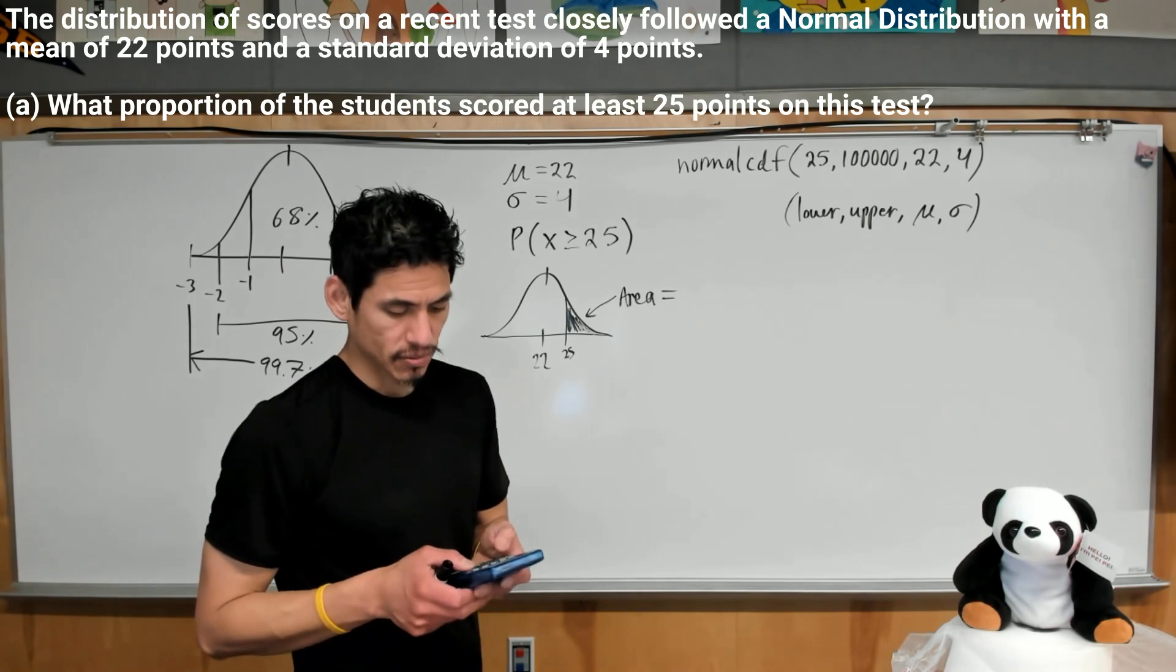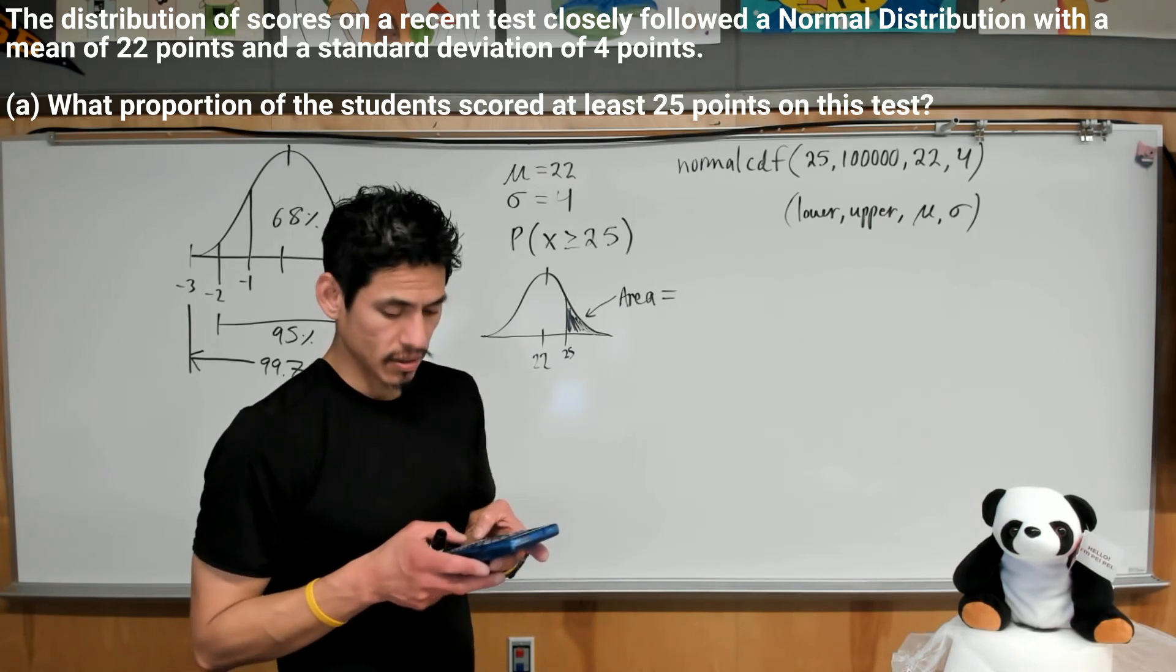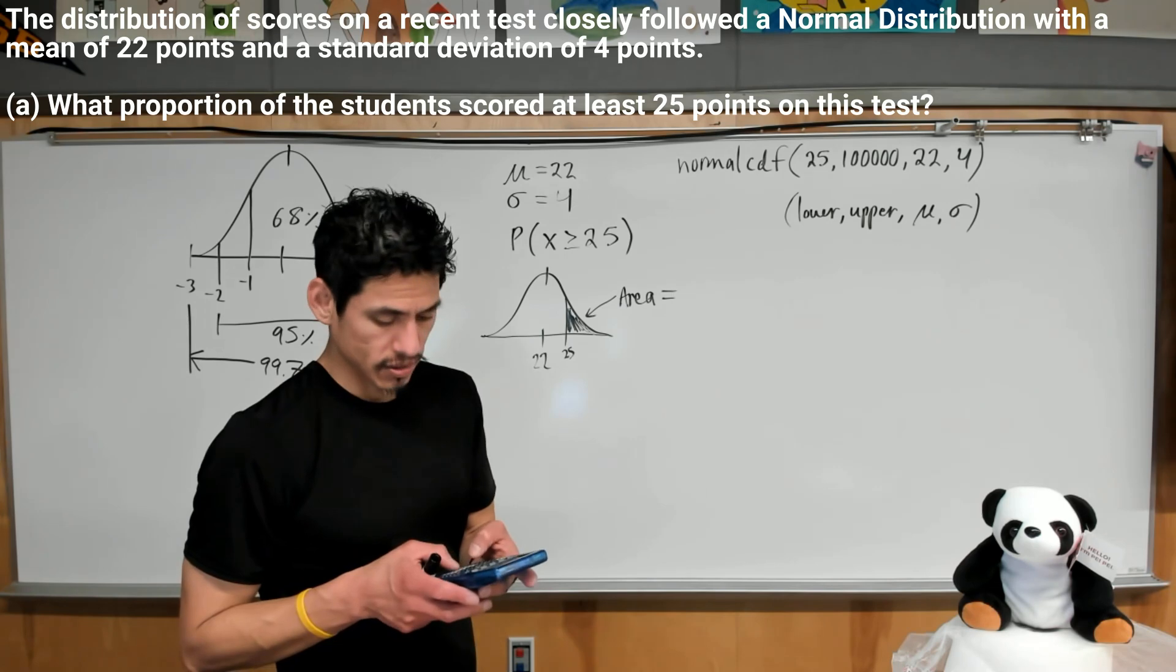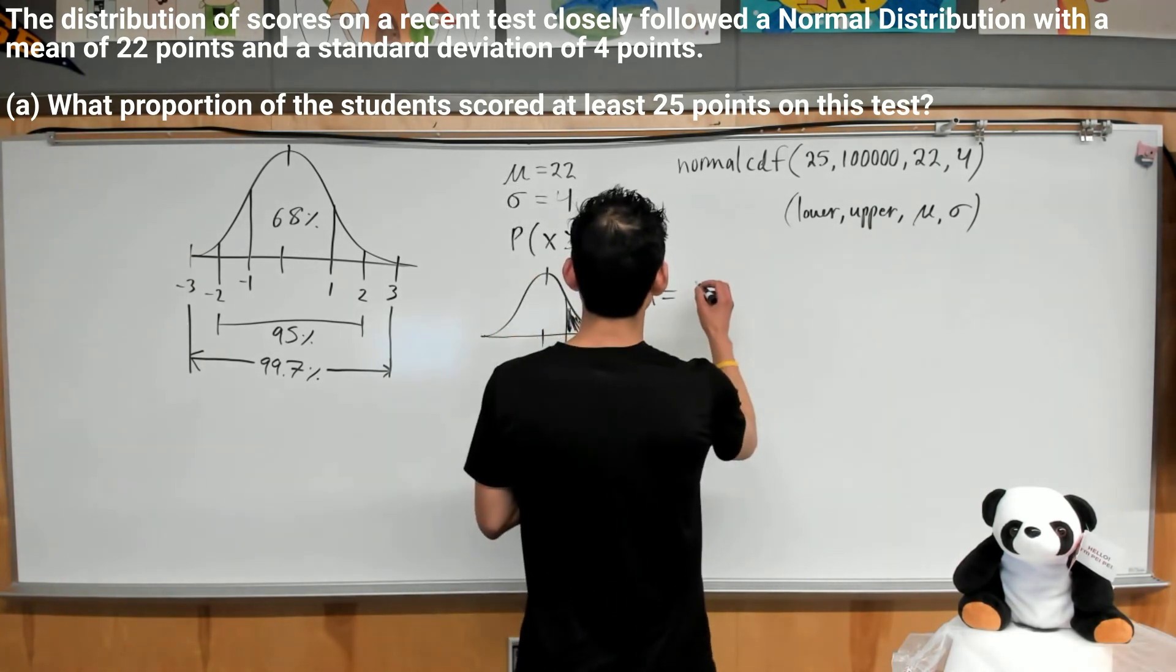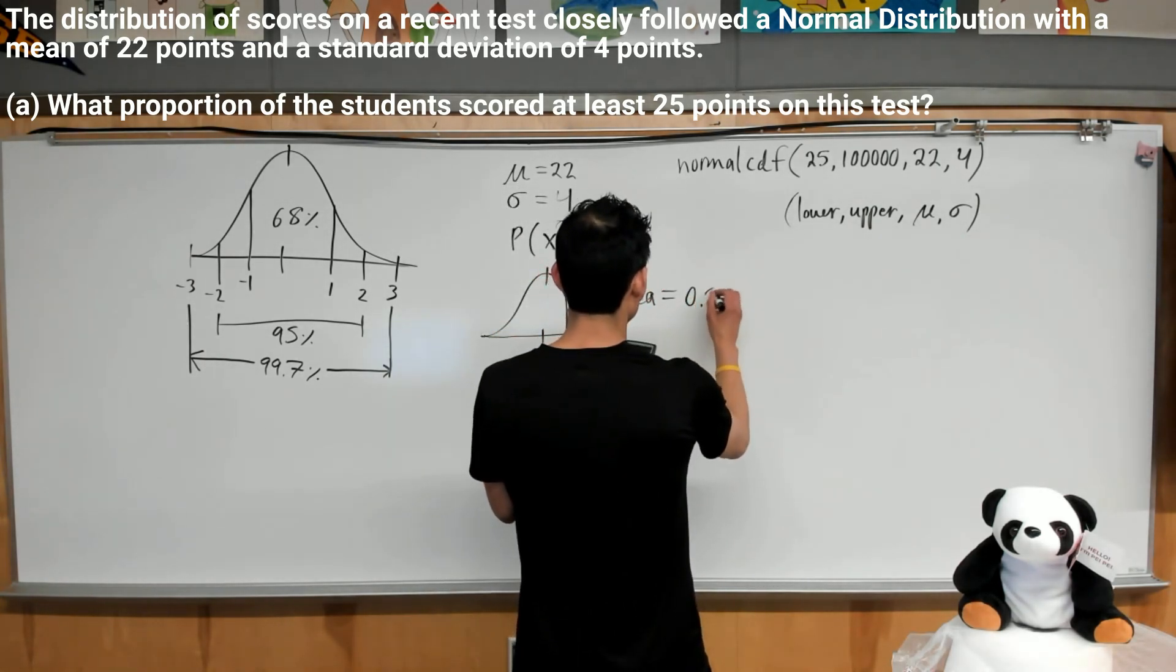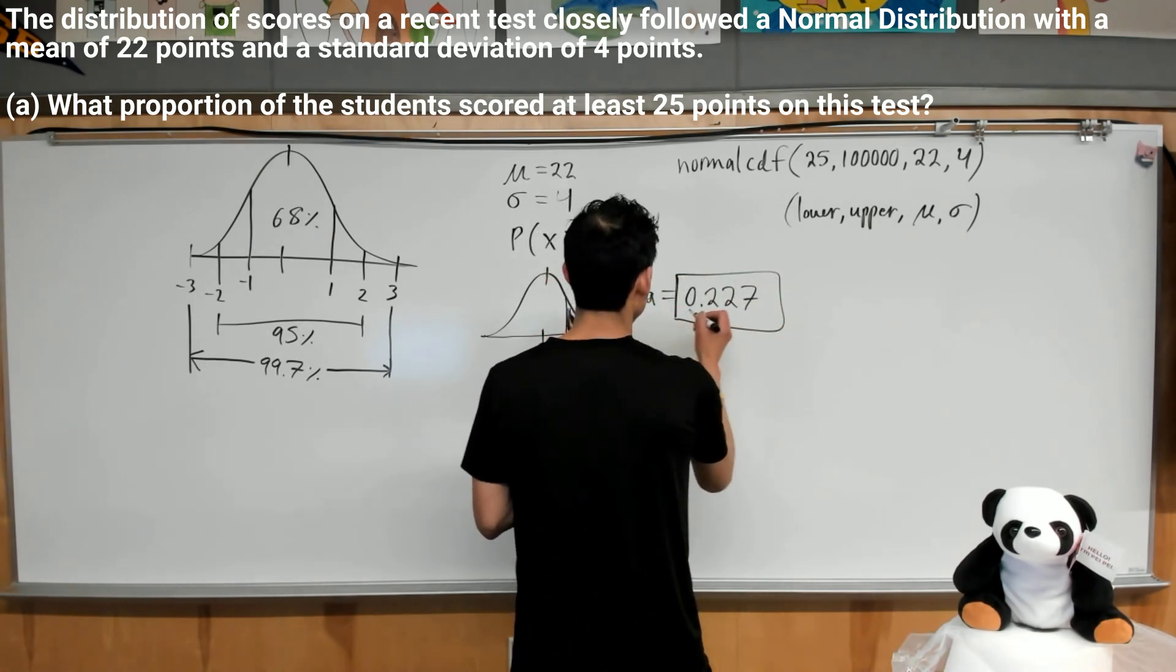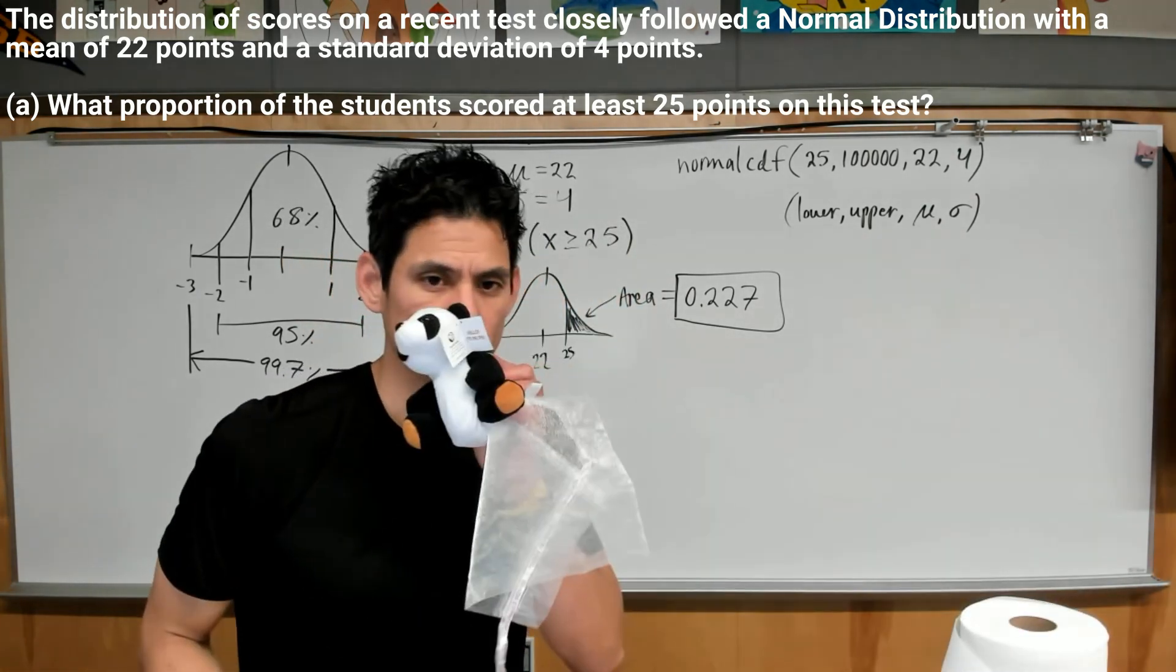Alright, so let's run this calculation. So we go to distribution, normal CDF, lower 25, upper 22, comma 4. And we're going to get a probability of about 0.2266, 0.227. It's about 22.7% of the students got scores of 25 or more. Nice.